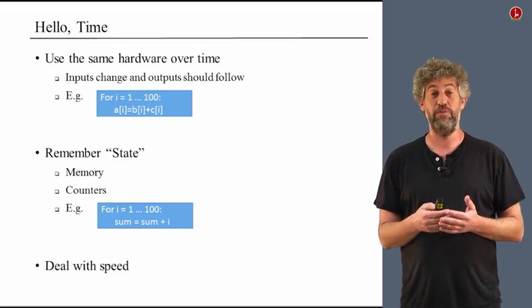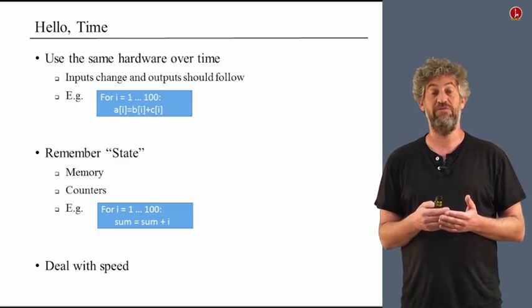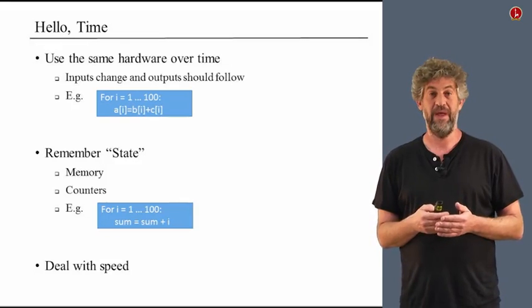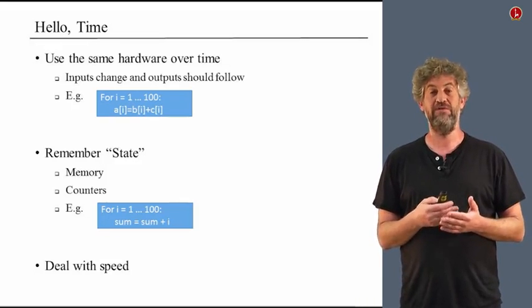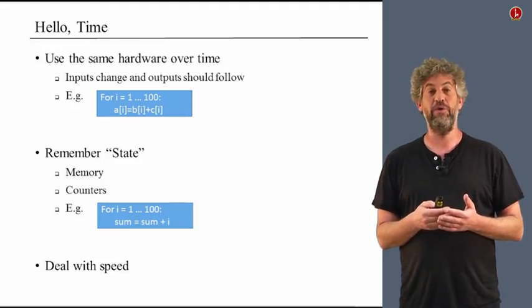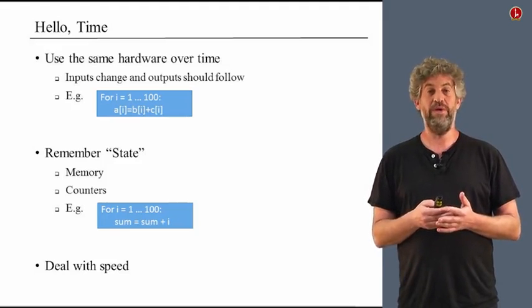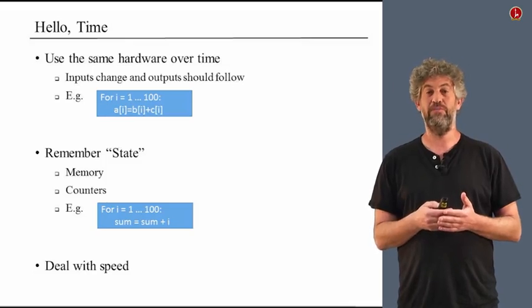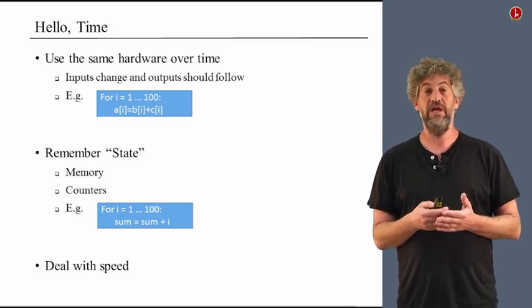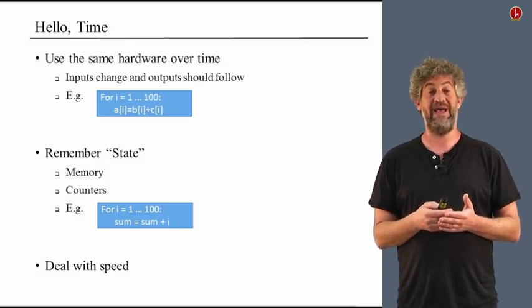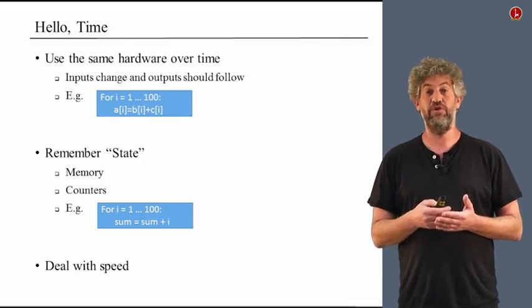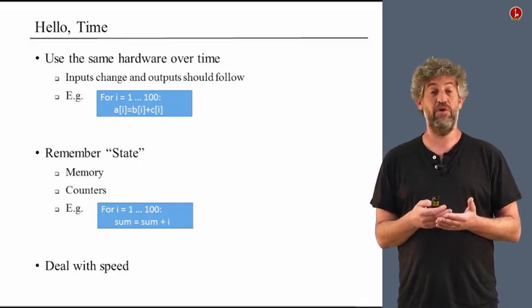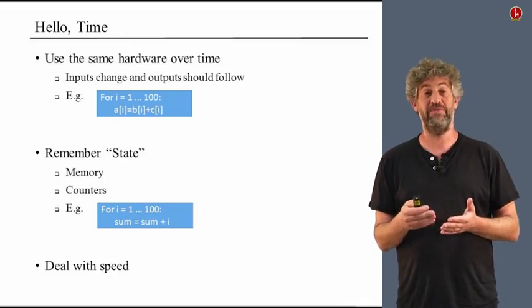For example, if we take some kind of loop in a software program that calls for doing the same thing many times, we want to be able to use the same hardware to do that. Another important thing that we need time for is to actually remember things from the past. We need to remember intermediate results, we need to remember where we are in a computation. For example, if we have a loop that adds a hundred numbers and gets a total sum, we will need to add the intermediate sums — otherwise there's no way to build up the total sum.